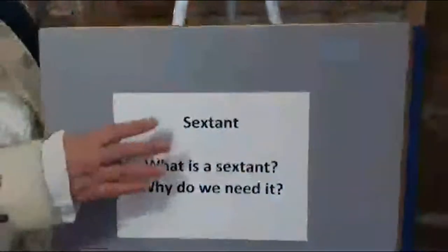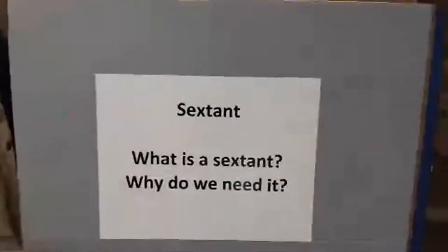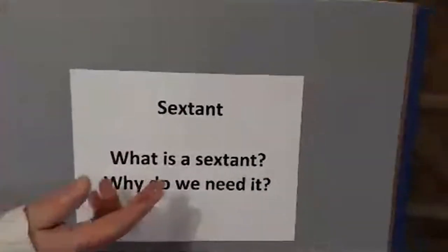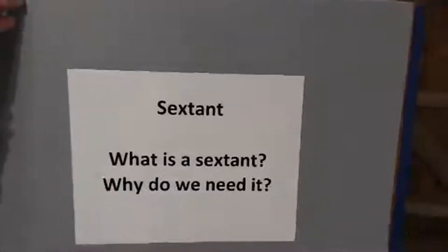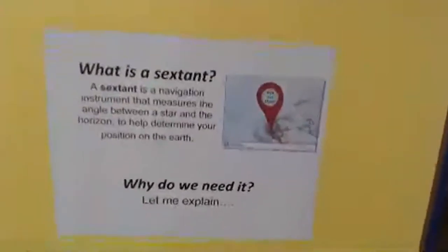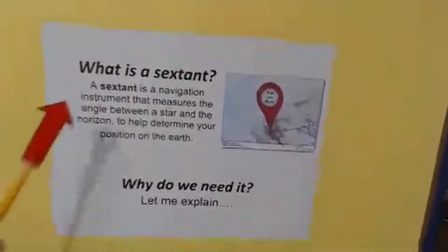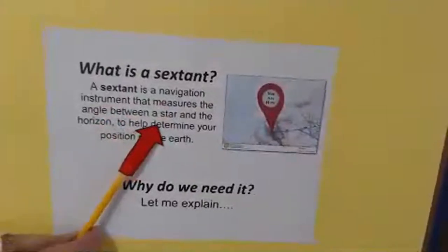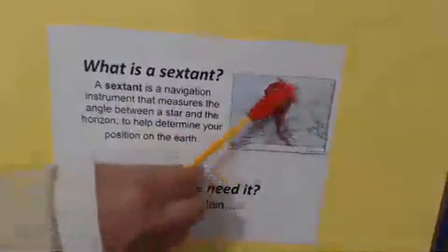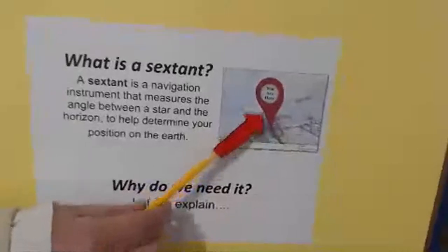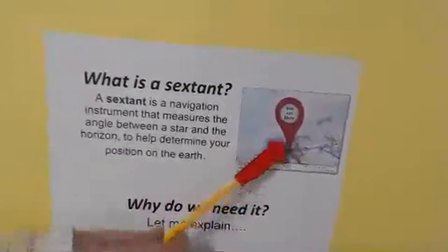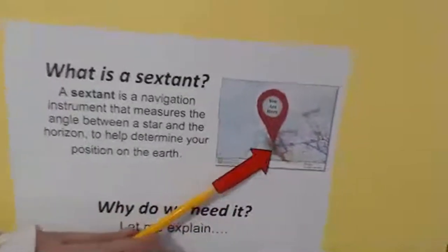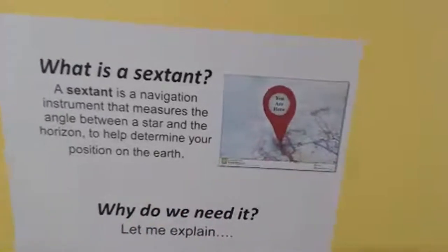We're going to be talking about a sextant — what is a sextant and why do we need one. A sextant is basically a navigation tool used to help locate yourself and pin down a position on the earth. It's kind of like those maps that say 'you are here' — a sextant will identify where you are.